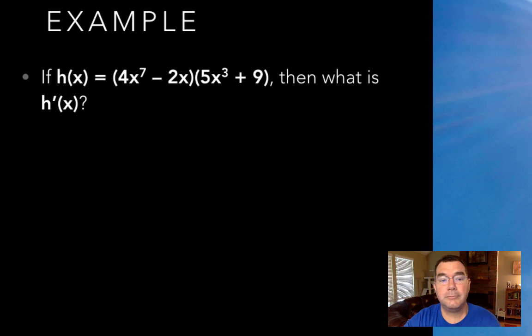For example, if I have a function that is 4 times x to the 7 minus 2x multiplied by 5x to the 3rd plus 9, then what is h prime? Now, I could easily multiply those out and find the derivative that way, but I just want you to see that this rule actually works.